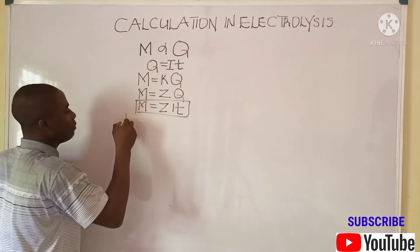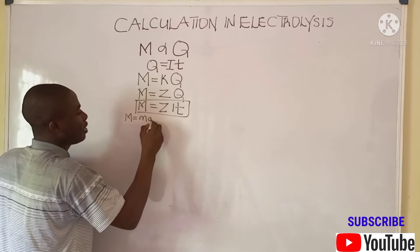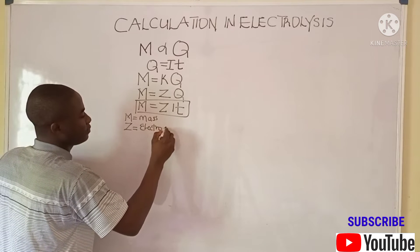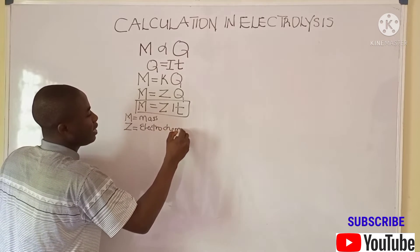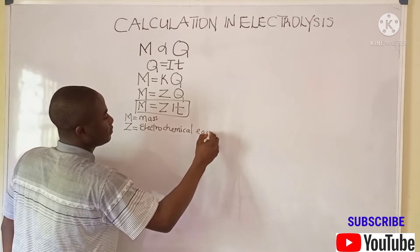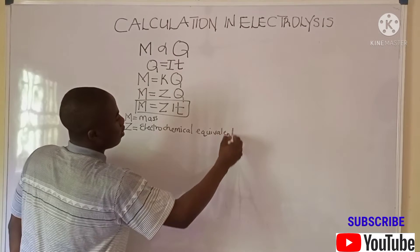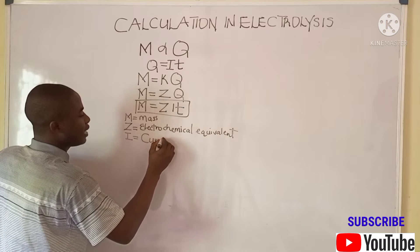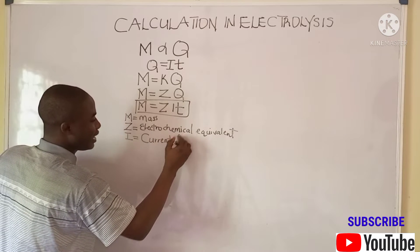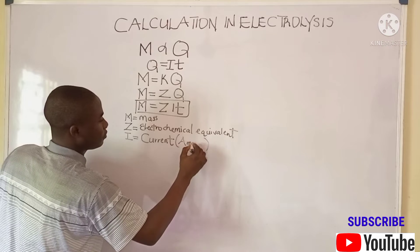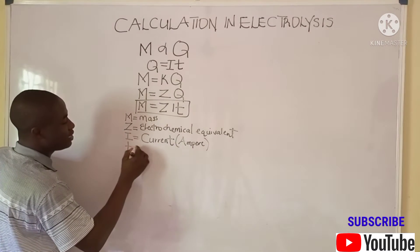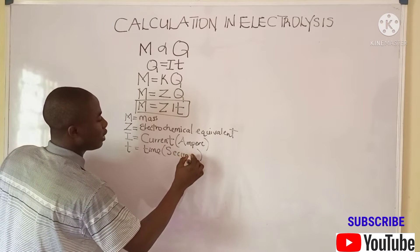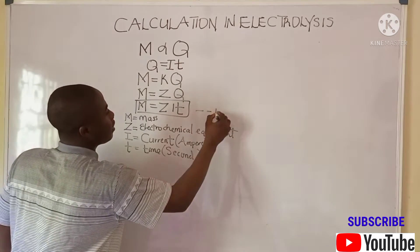In this formula, m signifies mass, z signifies electrochemical equivalent, i signifies current in amperes, and t signifies time in seconds. This is a very important formula to be noted in solving problems on electrolysis.